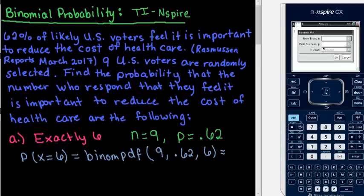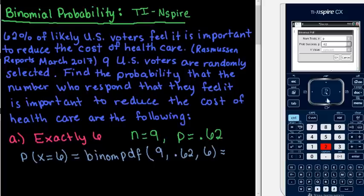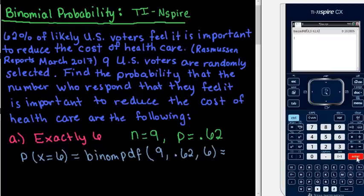We want to make sure we choose binomial PDF because it's a probability density function. It asks us how many trials — our N is nine people. The probability of success is 0.62. Because we are specifically looking for 6, we plug in 6 and click OK. Our probability is 0.2618, so approximately 0.2618.